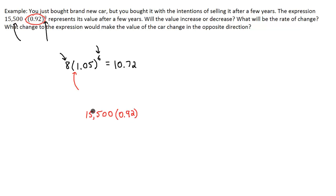So if we take 15,500, multiply it by 0.92, that would be like if we wanted 92% of this value right here. That would be 14,260. So it looks like we have a decrease in value.